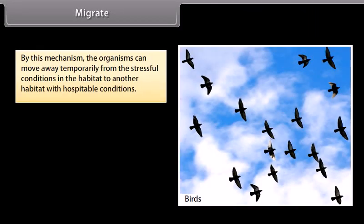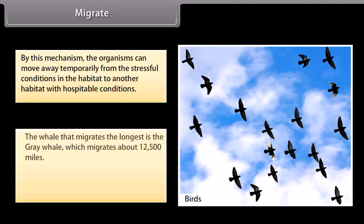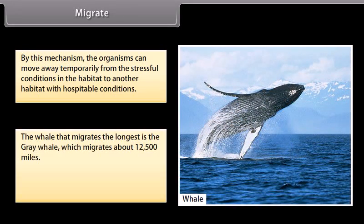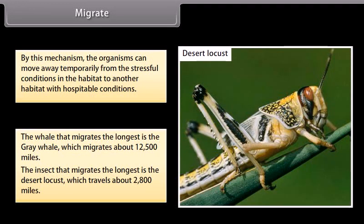By migration, organisms can move away temporarily from stressful conditions in their habitat to another habitat with hospitable conditions. The whale that migrates the longest is the grey whale, which migrates about 12,500 miles. The insect that migrates the longest is the desert locust, which travels about 2,800 miles.